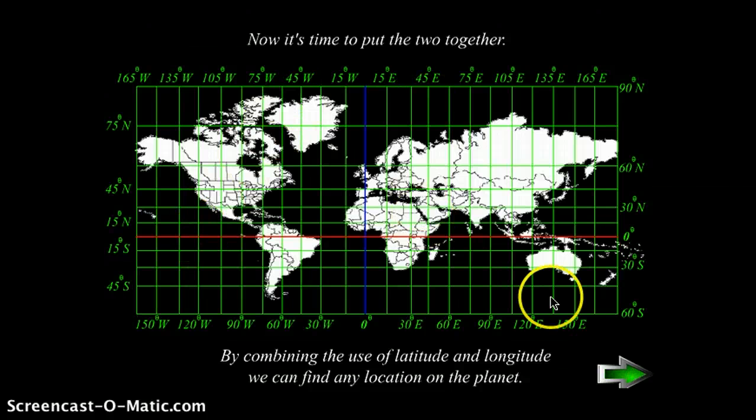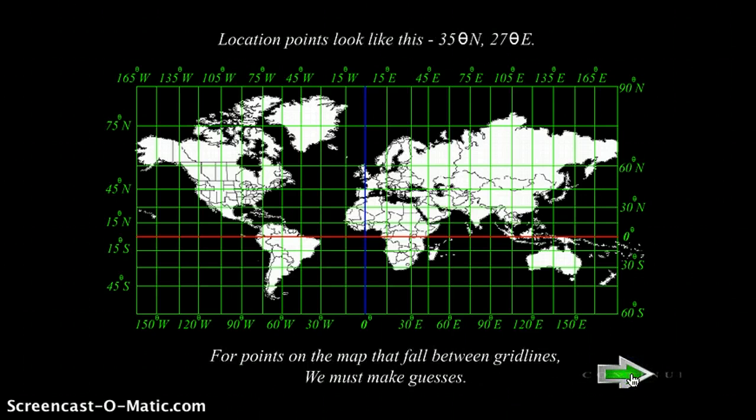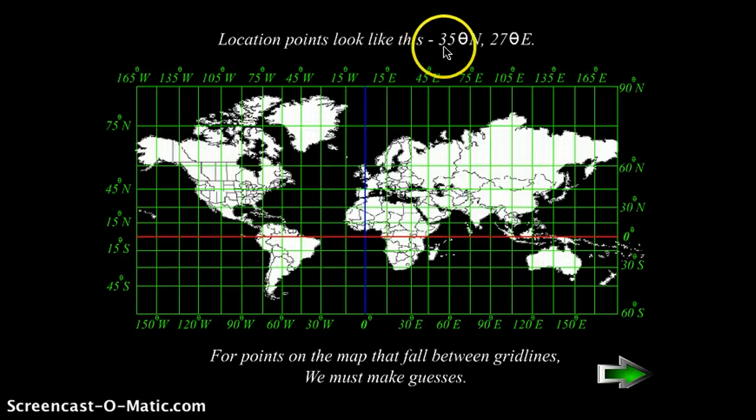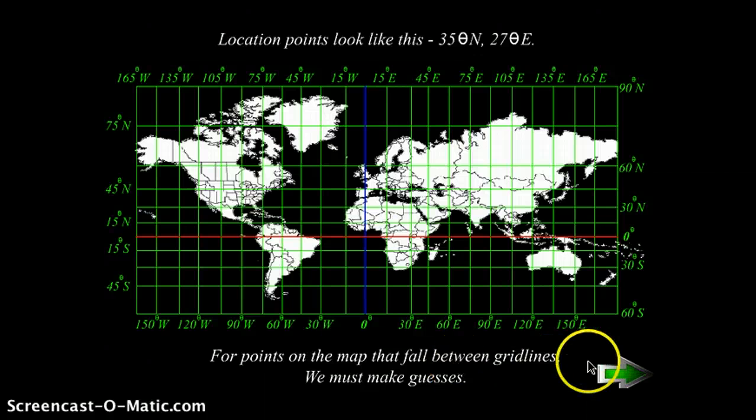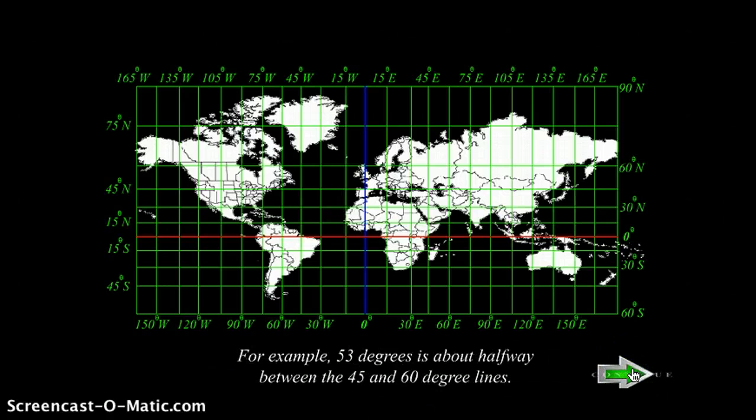Now it's time to put the two together. By combining the use of latitude and longitude, we can find any location on the planet. Location points look like this: 35 degrees north, 27 degrees east. For points on the map that fall between grid lines, we must make guesses, approximate, educated guesses. We have to estimate.